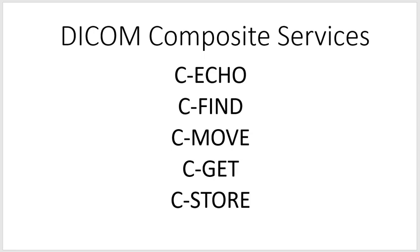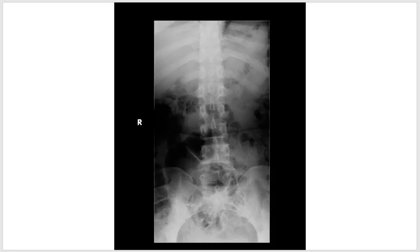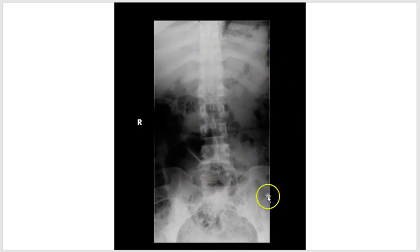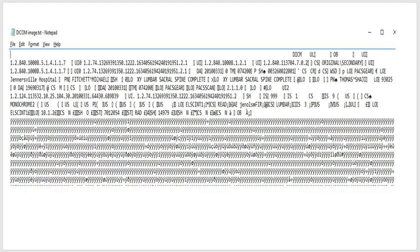This is what humans see — an image. Hopefully you recognize that this image is a lumbar spine. There's the lumbar spine right there, and you can see some ribs and the top of the pelvis. That's what a human sees. This is what the computer sees.